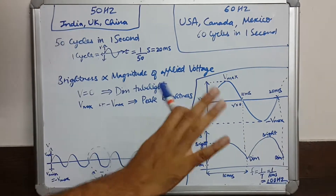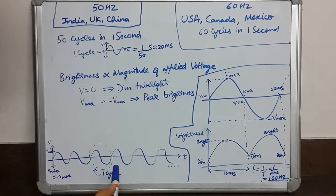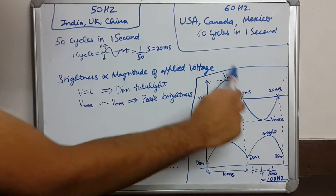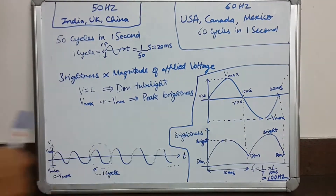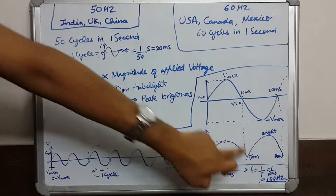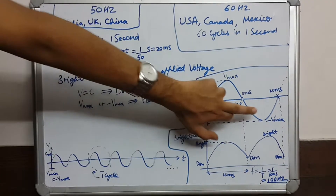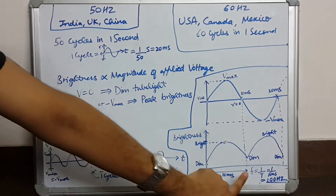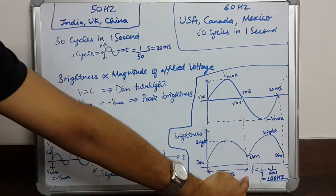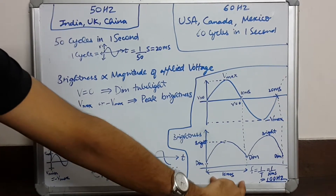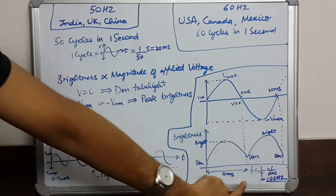So we note that in one cycle of voltage we get two cycles of brightness. One cycle of voltage is 20 milliseconds, so one cycle of brightness is 10 milliseconds.